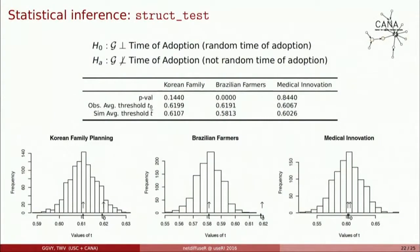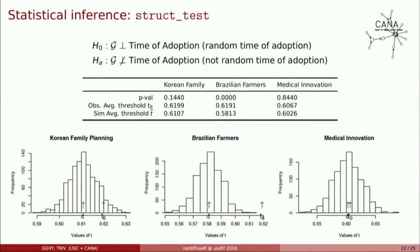We can also do statistical inference with NetDiffuser. Here is the output from non-parametric statistical tests we implemented that test whether a particular behavior depends on the structure of the network. The null hypothesis is that times of adoption are independent from the network structure — no evidence of contagion. Running the tests on the three included datasets, results align well with previous findings. Korean family planning shows mixed evidence; medical innovation data shows no big evidence of contagion; and Brazilian farmers clearly show evidence of contagion, which the test confirms.